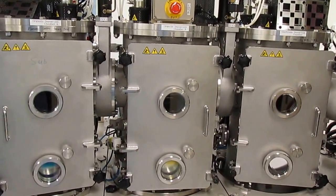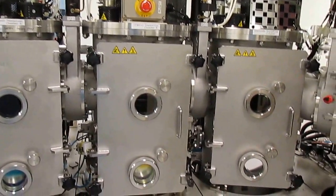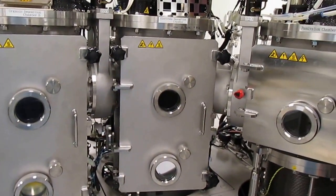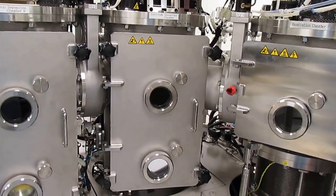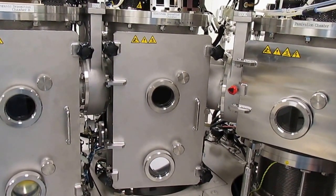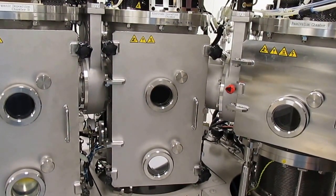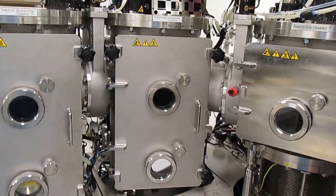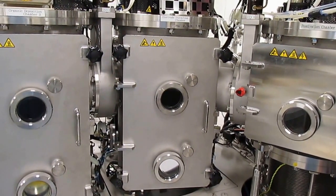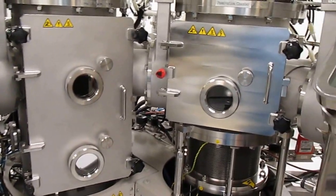Once the emissive layers and electron transport layers are deposited, it moves into the third chamber where we evaporate the electron injector, usually lithium fluoride or lithium quinolate. Then an aluminum electrode about 120 nanometers is deposited from the aluminum wire-fed heater.